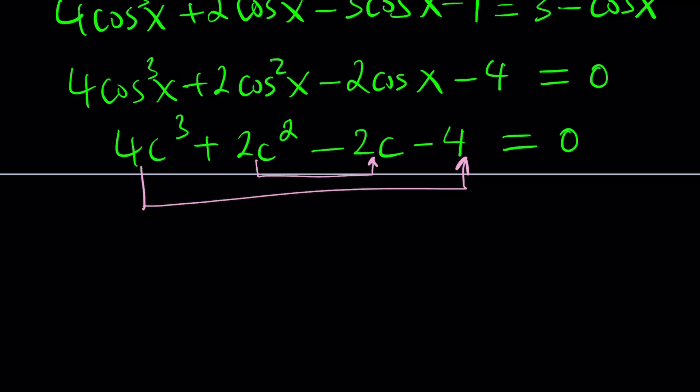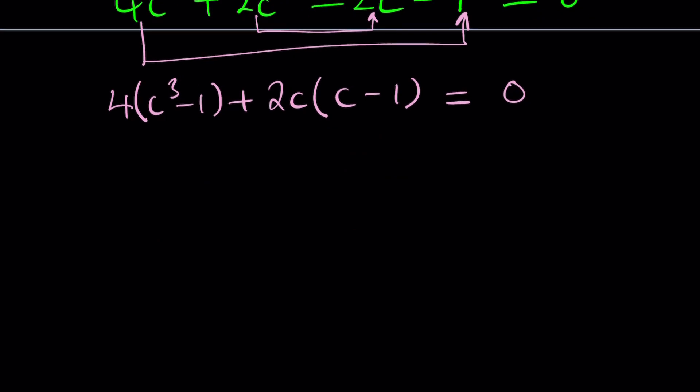So 4c cubed minus 4, we can take out a 4, write this as c cubed minus 1. And then 2c is a common factor here, and c minus 1. Obviously c cubed minus 1 is a difference of two cubes and it's divisible by c minus 1. So we can go ahead and factor it as c minus 1 times c squared plus c plus 1. And then 2c times c minus 1 equals 0.